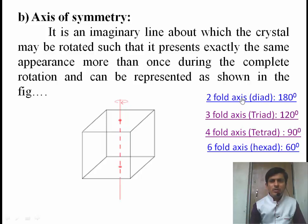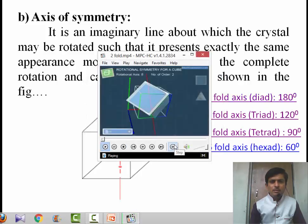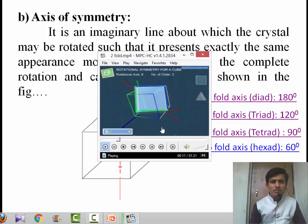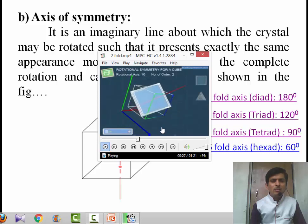The 2-fold axis of symmetry: the axis passes through opposite edges of the crystal, and during rotation it shows the same appearance 2 times. After rotating through 180 degrees it shows the same appearance. Therefore, this axis is called the 2-fold axis, or diad.